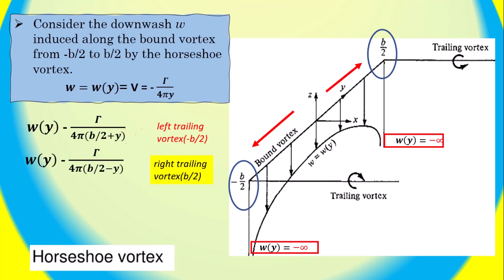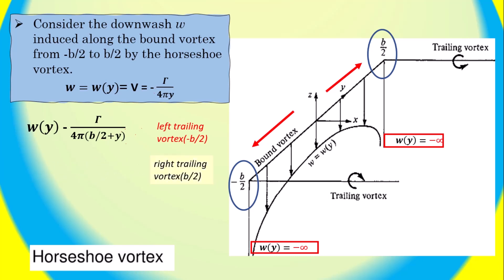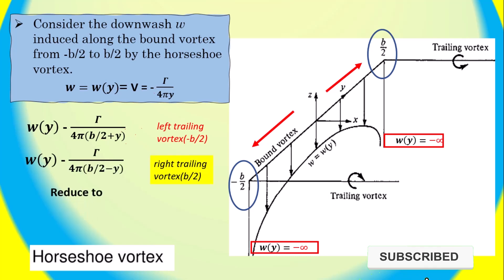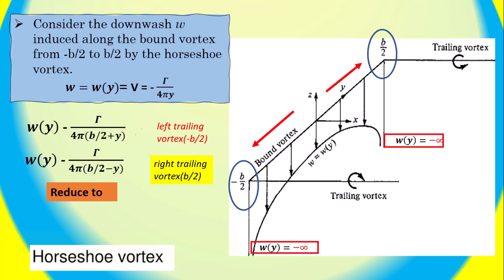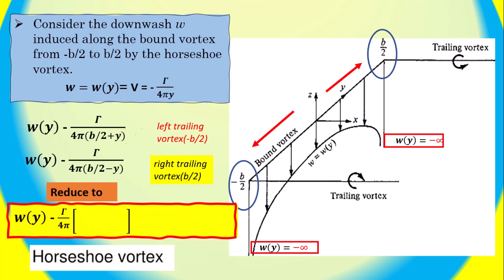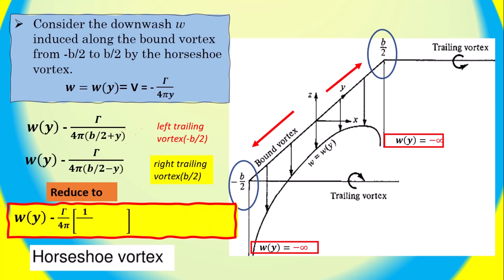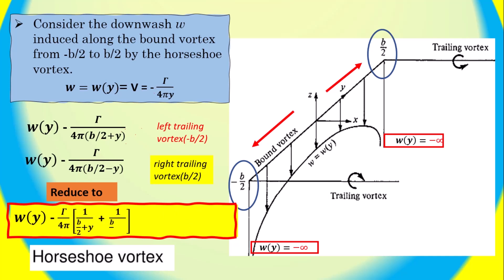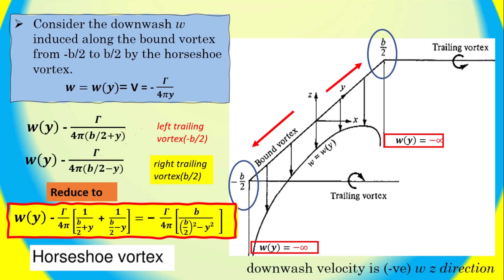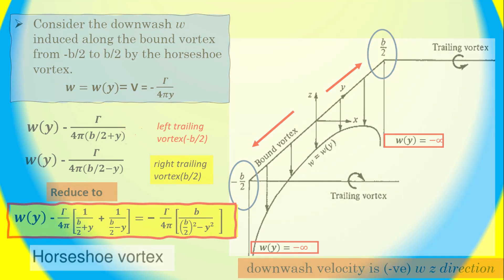The downwash velocity W(Y) from the right trailing vortex trailing from B/2 is equal to negative gamma divided by 4 pi times (B/2 minus Y). Combining contributions, the total downwash velocity W(Y) equals negative gamma divided by 4 pi times (B²/4 minus Y²).